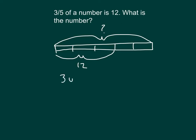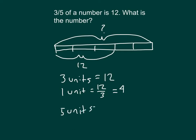Working that out, we know three units equals 12. That means one unit equals 12 over three. Dividing both sides by three, one unit equals 12 thirds, and 12 thirds equals four. Now we need to figure out the whole — five units — so five units equals four times five, which equals 20. The number is 20.